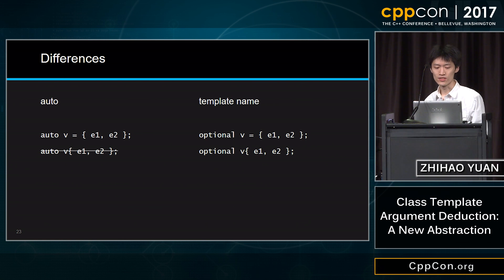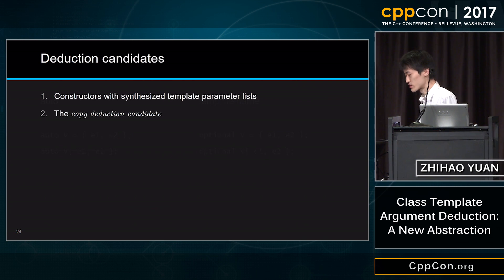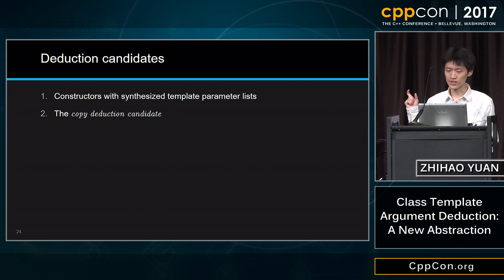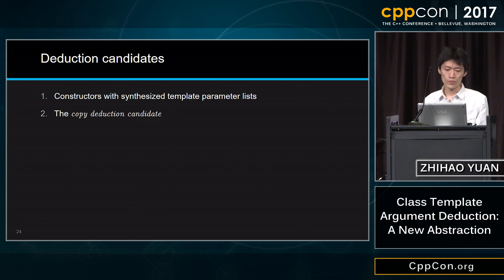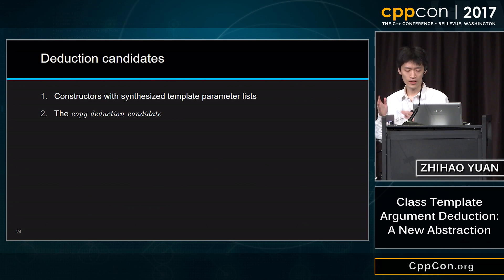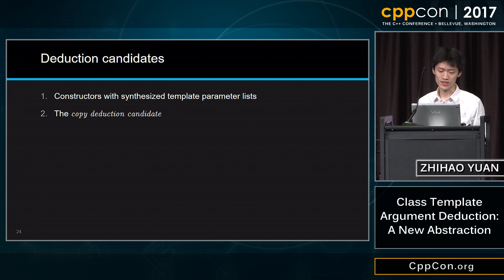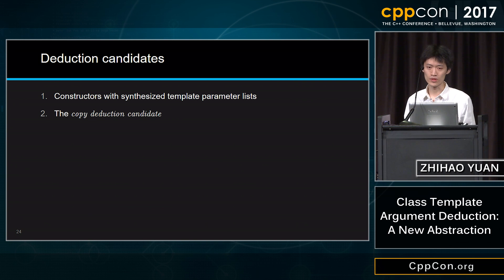When class template argument deduction is used with one argument and that argument is a specialization of the class template you want to declare against, it always tries to do a copy. So we have this new set of candidates called the 'copy deduction candidate' to impose this. This behavior can be overwritten, but as you've seen in previous slides, it may not be a good idea to do so — because in generic programming, somebody might compare behavior against auto, and if they get a different result, there will be something surprising.